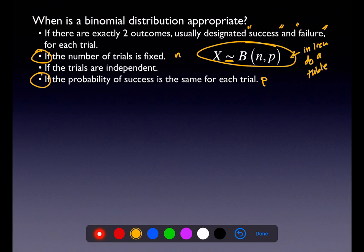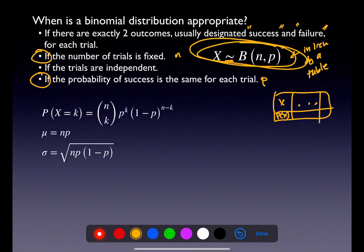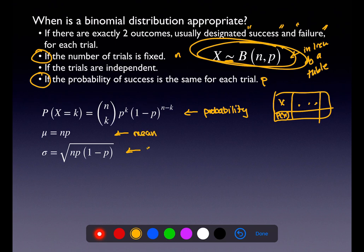We use n and p to write the 'squiggles' — the tilde symbol meaning 'is distributed by.' This notation, written with n and p, is in lieu of a table, meaning I don't have to make the table with sample space on top and probabilities on the bottom. From recognizing a binomial experiment you get the probability formula, the mean formula, and the standard deviation formula.